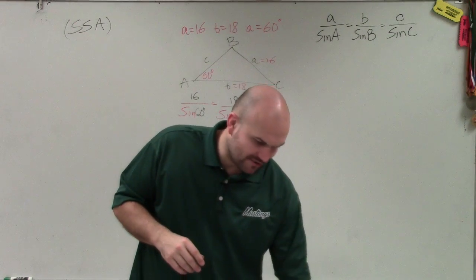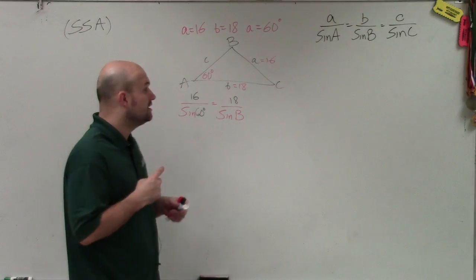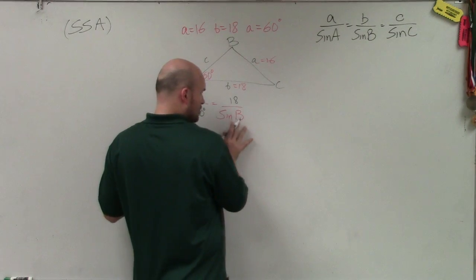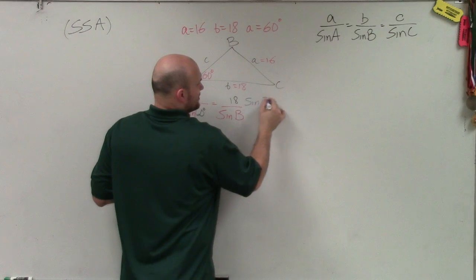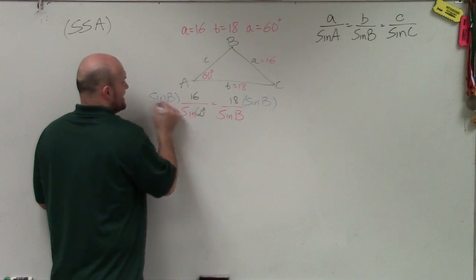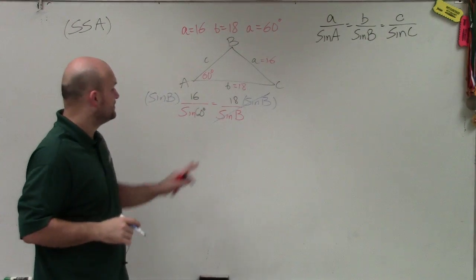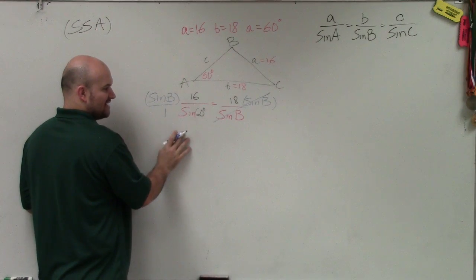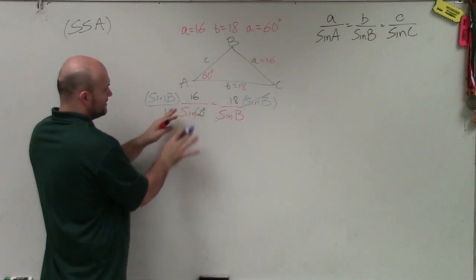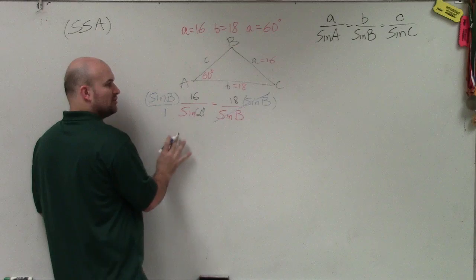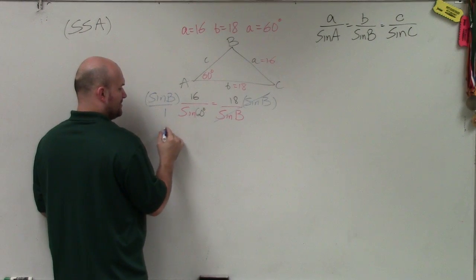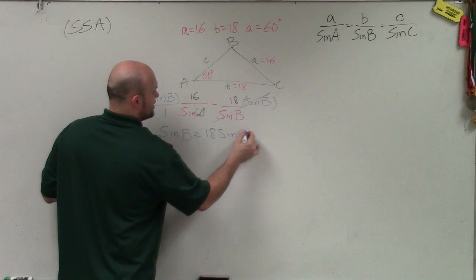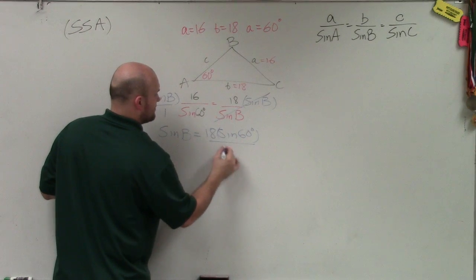If you watched my other videos on law of sines for angle-side-angle or angle-angle-side, you'd know we need to solve for B by getting it off the denominator. So I'm going to multiply by sine of B on both sides. That's going to get rid of sine of B from the denominator. Then I have sine of B times 16 divided by sine of 60. To solve for sine of B, I multiply by the reciprocal on both sides, giving me sine of B equals 18 times sine of 60 degrees, all divided by 16.